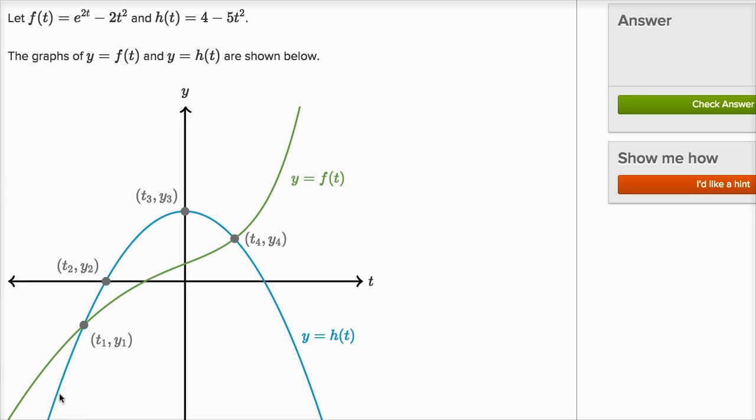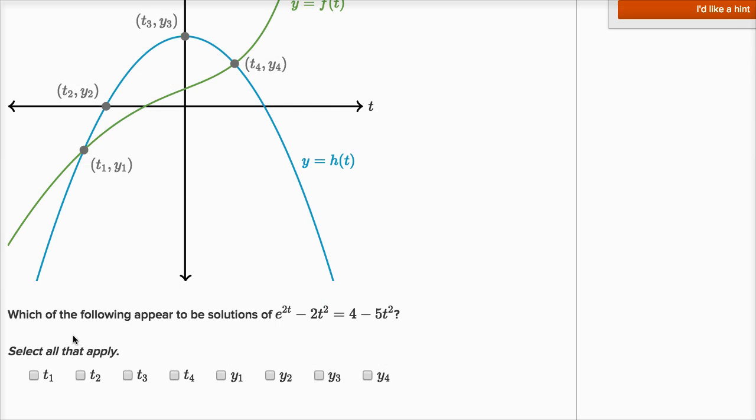And y is equal to h of t is shown in yellow. Now below that, they say which of the following appear to be solutions of e to the 2t minus 2t squared equals 4 minus 5t squared?